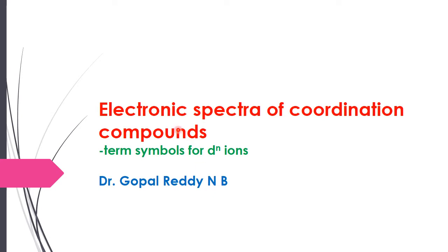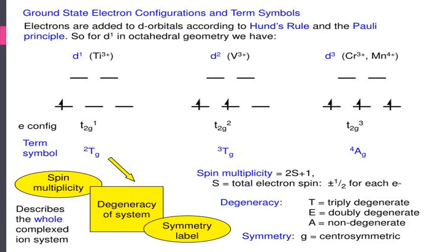Greetings, this is Dr. Gopal Reddy. Today's topic is electronic spectra of coordination compounds — specifically the derivation of term symbols for dn ions, where dn means d1 to d9. Let us come to the derivation of ground state electronic configuration and term symbols.